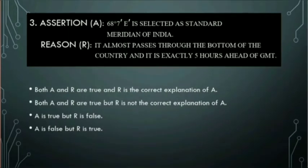Question 3. Assertion: 68 degrees 7 minutes East is selected as the standard meridian of India. Reason: It almost passes through the bottom of the country and is exactly 5 hours ahead of GMT.